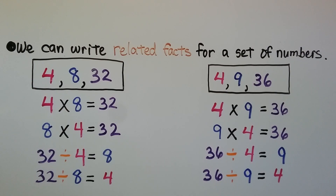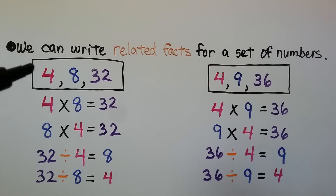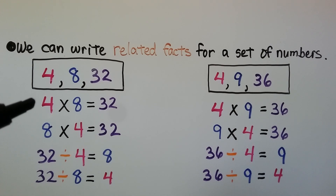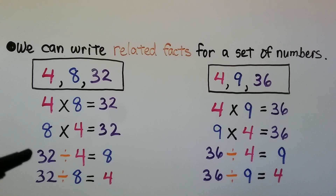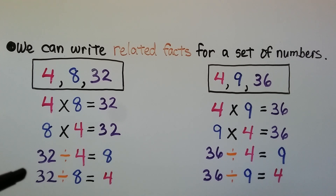We can write related facts for a set of numbers. We have 4, 8, and 32. We can write: 4 times 8 is equal to 32; 8 times 4 is equal to 32; 32 divided by 4 is equal to 8; and 32 divided by 8 is equal to 4.